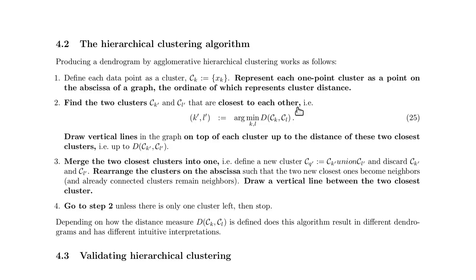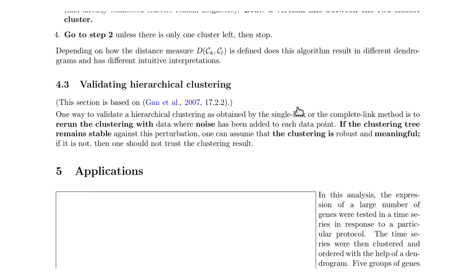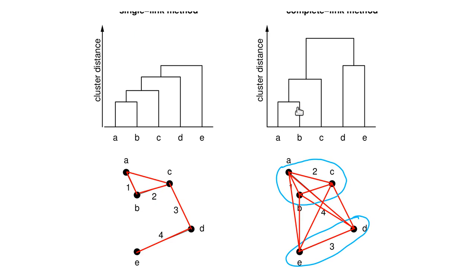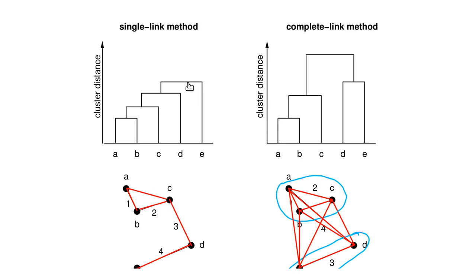The algorithm always gives a result, but the question is how valid that result is. One way to check is to introduce some noise on the positions of the data points. If the dendrogram is robust with respect to that noise, the structure is meaningful; if there is large variation, it's probably not meaningful. You can also assess it from the dendrograms themselves: if the distances between merging processes are large, the result will probably be robust. But if the merging distances are very close together, moving the points around might produce a different merging order.